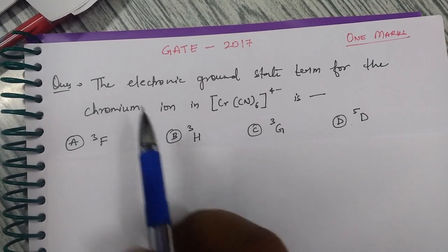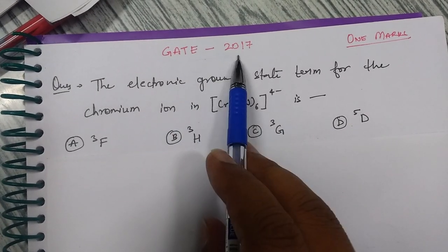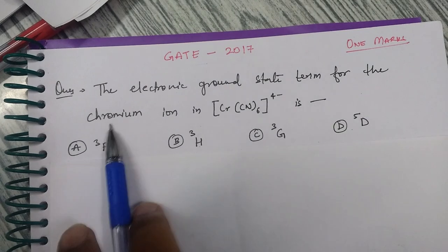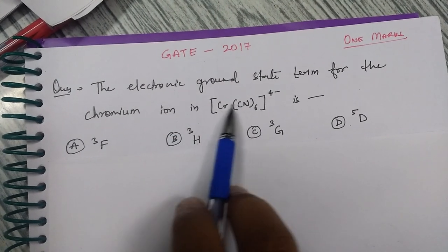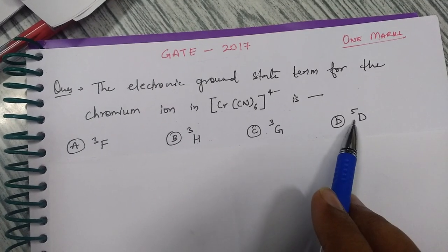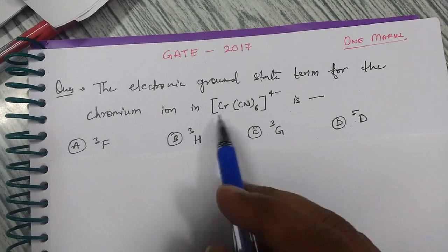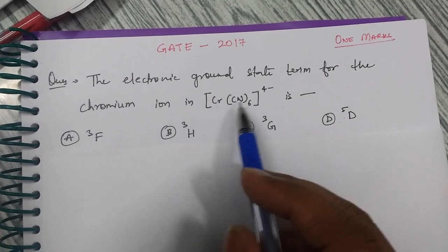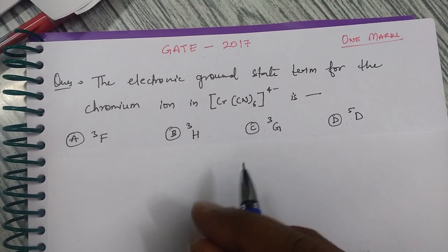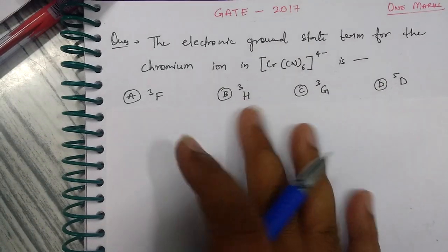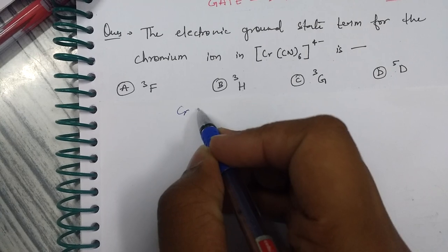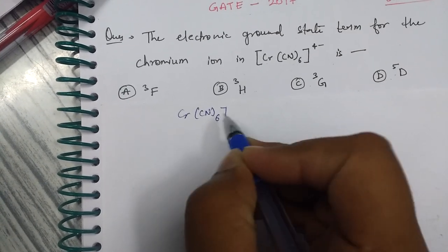In this video we will try to solve a question from the GATE 2017 exam. The question asks for the electronic ground state term for the chromium ion in a given complex — is it ³F, ³H, ³G, or ⁵D? We need to find the ground state term symbol for chromium ion in this complex.